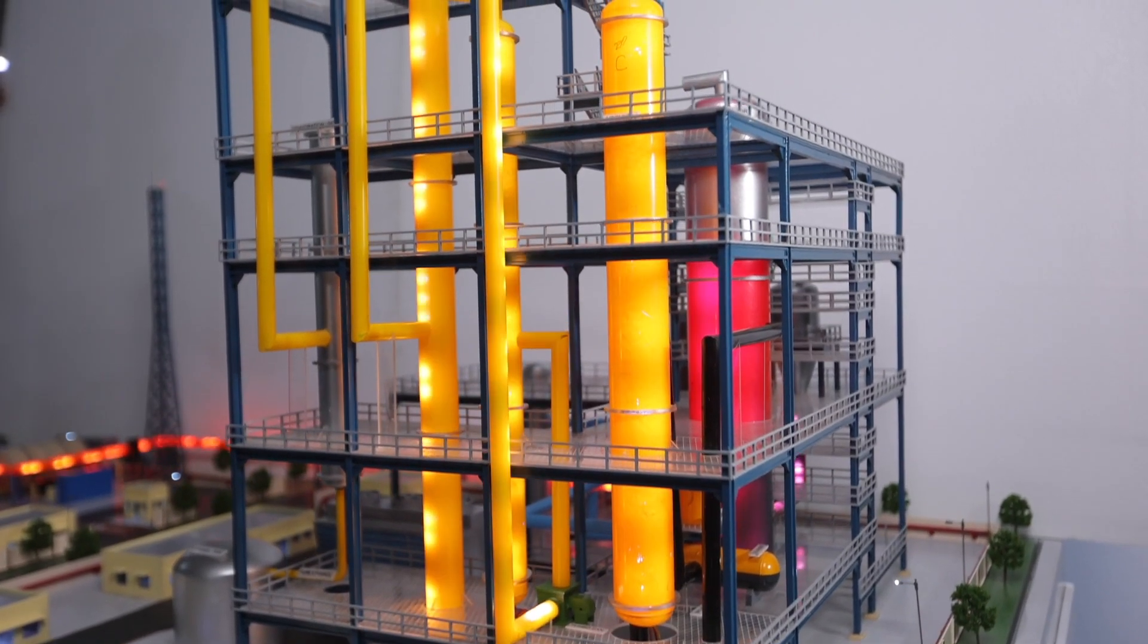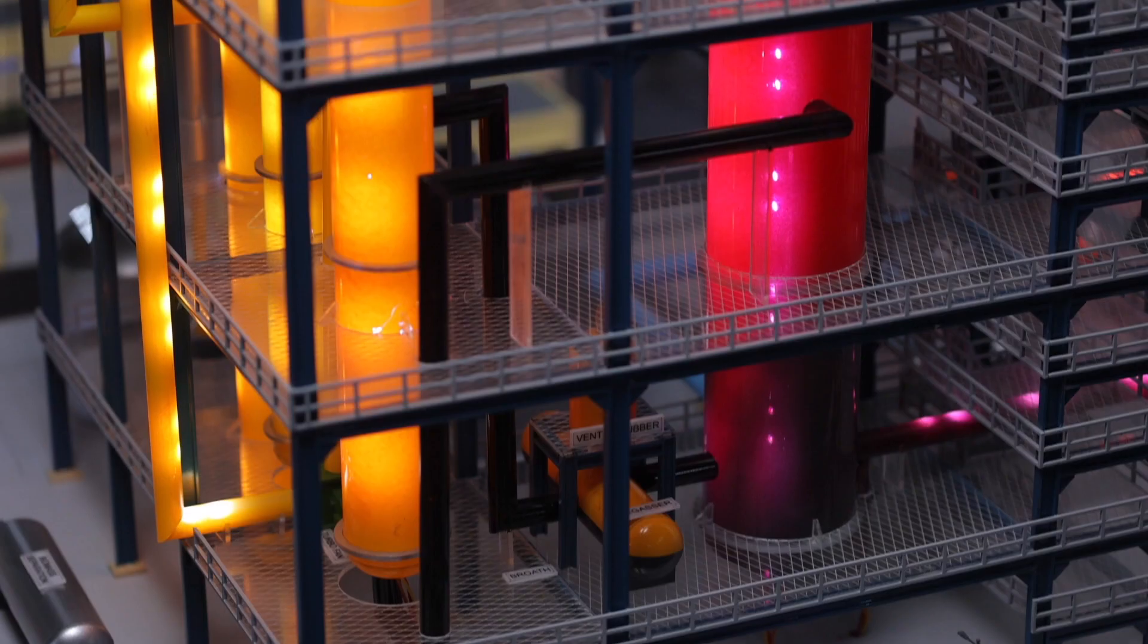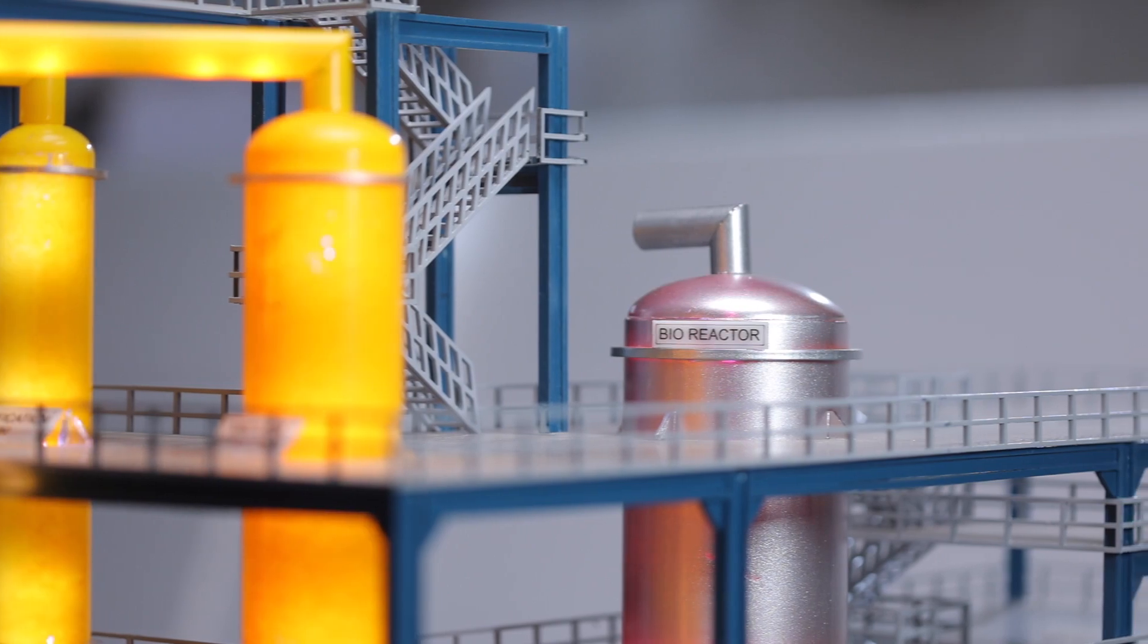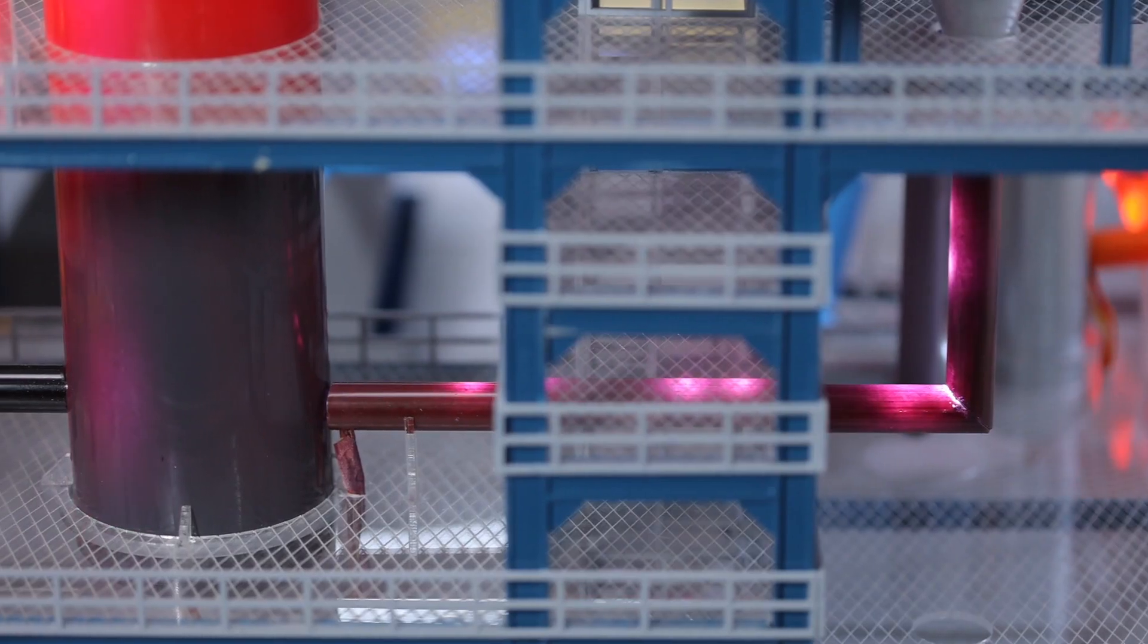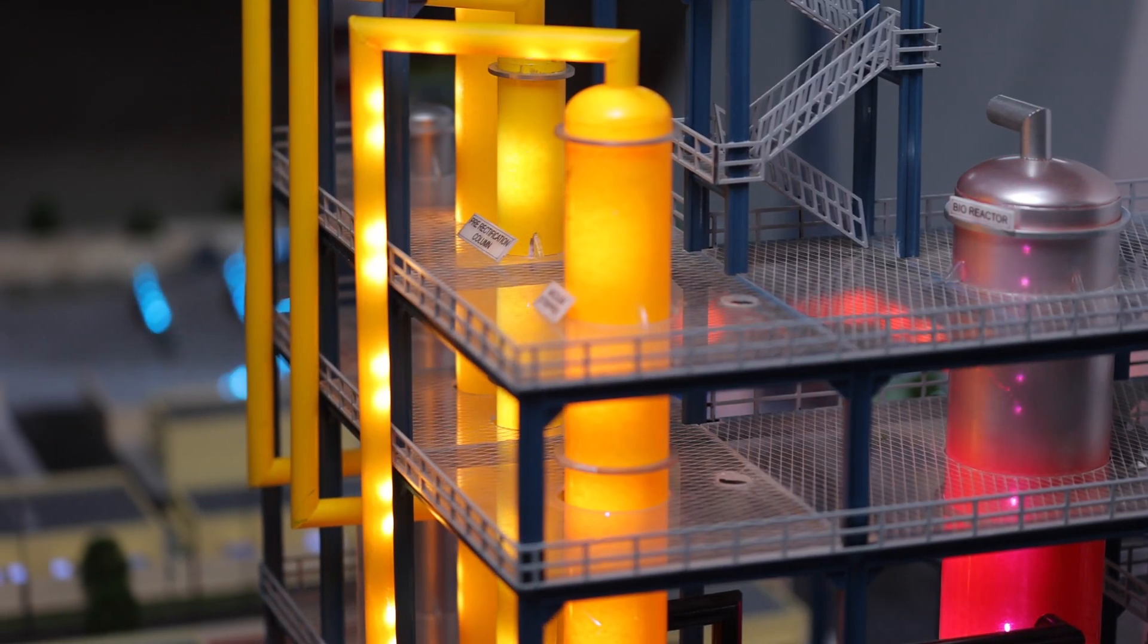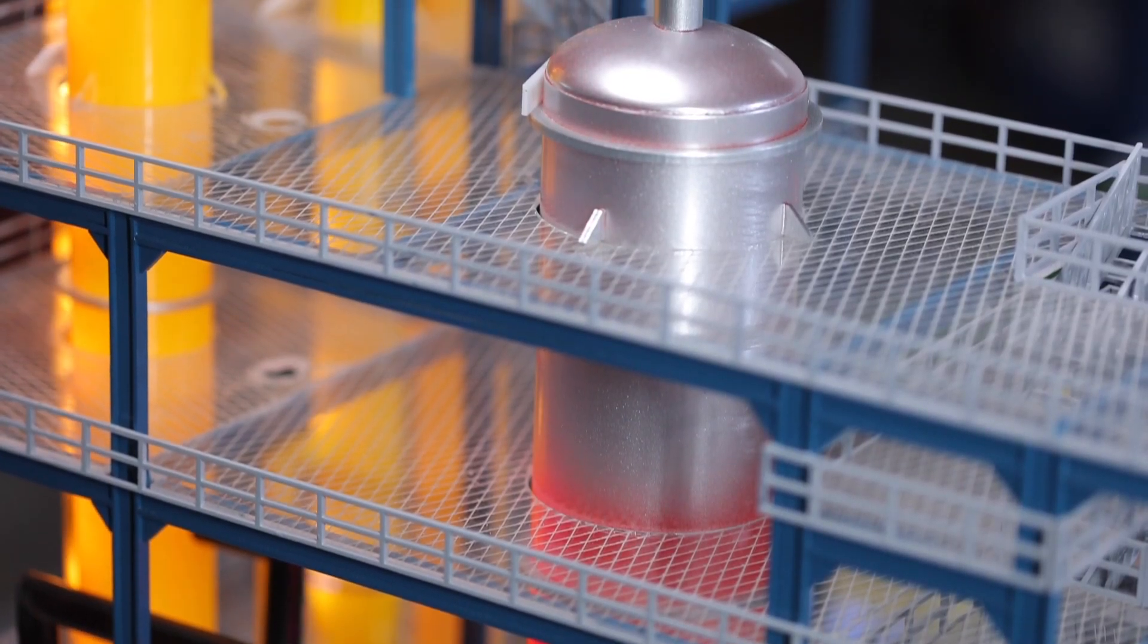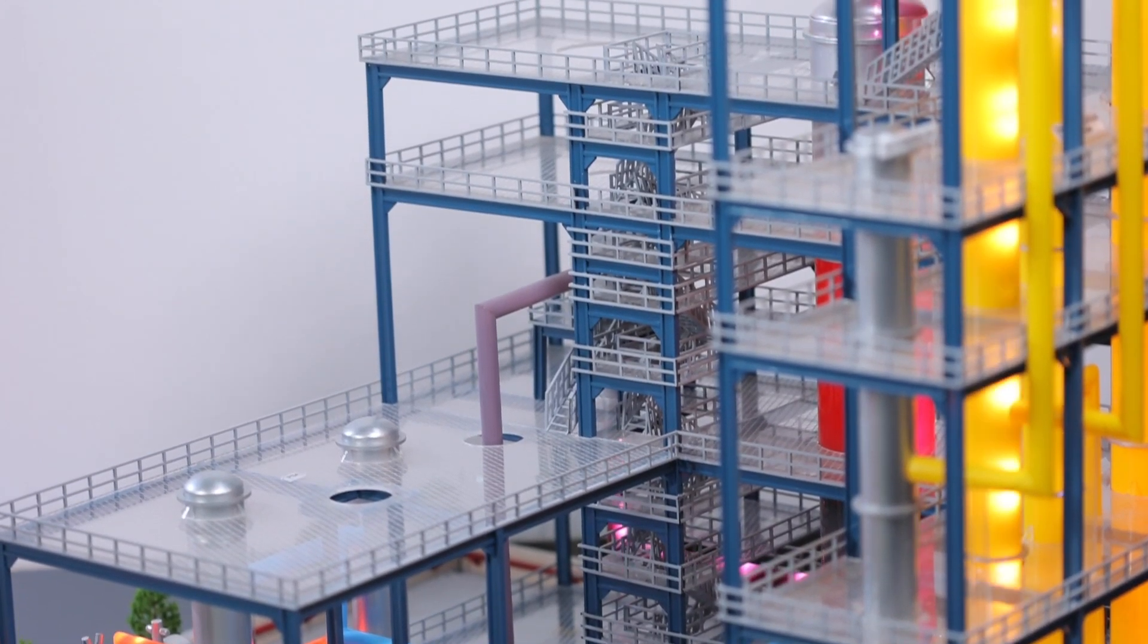Presynthesis: The syngas from gasifier enters into the CO2 capture unit, which will increase the CO concentration by CO2 removal through PSA absorption method. The syngas from PSA unit will be directly fed into bioreactor. Cell Mass Activation: One tapping from output of PSA shall be passed through inline CO membrane, which will increase the concentration of CO by filtering out hydrogen for activation of biocatalyst in cell mass culture unit.